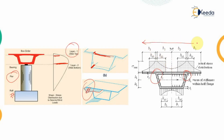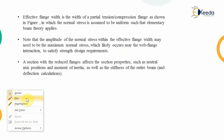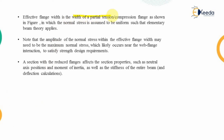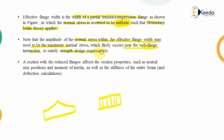For analysis purposes, the effective flange width is defined as the width of a partial tension or compression flange in which the normal stress is assumed to be uniform, such that the elementary beam theory (simple bending theory) applies. Note that the amplitude of the normal stress within the effective flange width need not be the maximum normal stress, which typically occurs near the web-flange interaction, in order to satisfy strength design requirements.